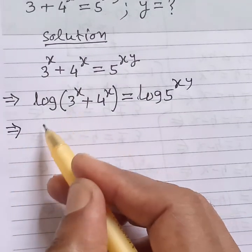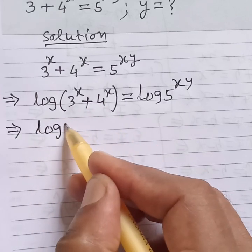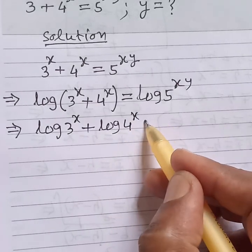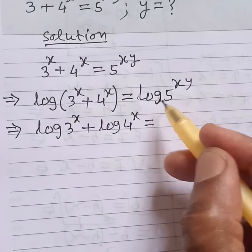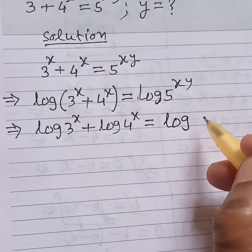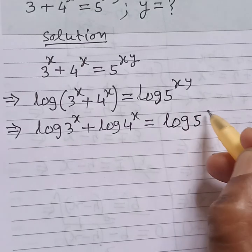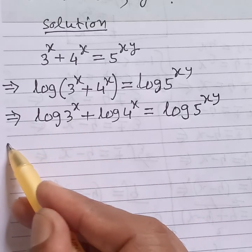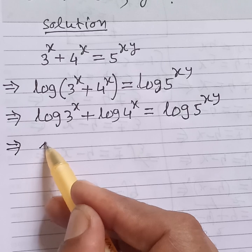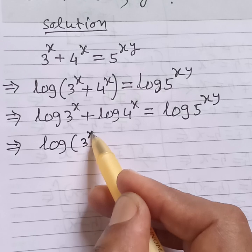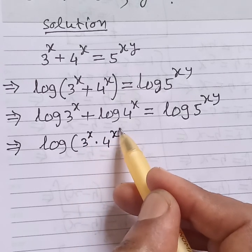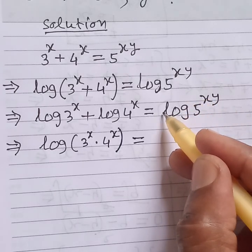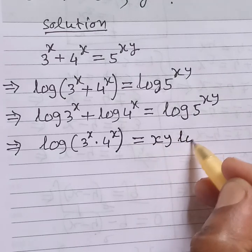This can be written as log of 3 to the power x plus log of 4 to the power x is equal to log of 5 to the power x. So, bringing the power down to base, it will be xy log of 5.